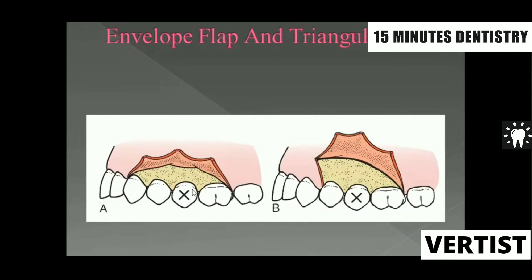This is called a horizontal incision. When you place a horizontal incision along the crevices — a circular sulcular incision — and then raise this flap, this is called the annular flap. The disadvantage of this flap is the limited access to the periapical region, as well as gingival recession in the post-operative healing.